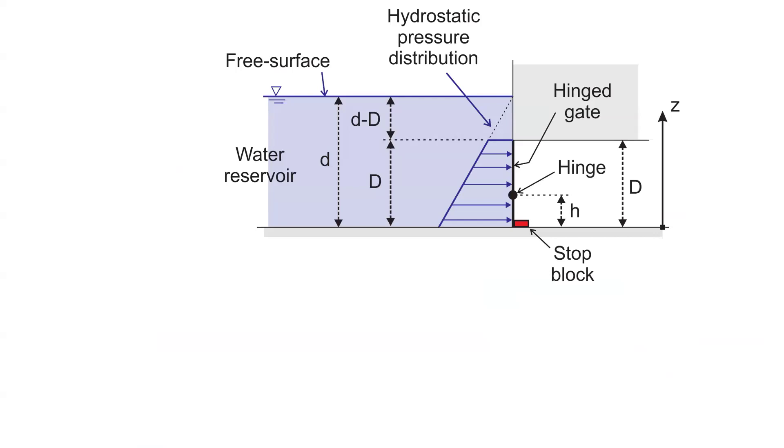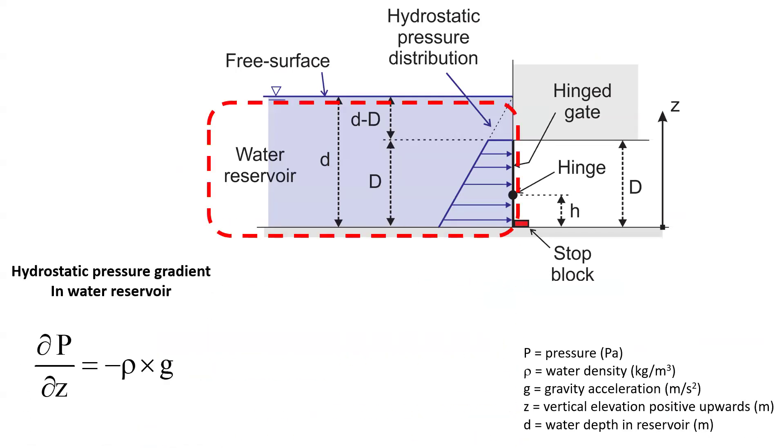Within the water reservoir, the pressure gradient is hydrostatic, that is the variation with vertical elevation of the pressure equals minus rho g, where rho is the water density, g is the gravity acceleration, and z the vertical elevation is positive upward.